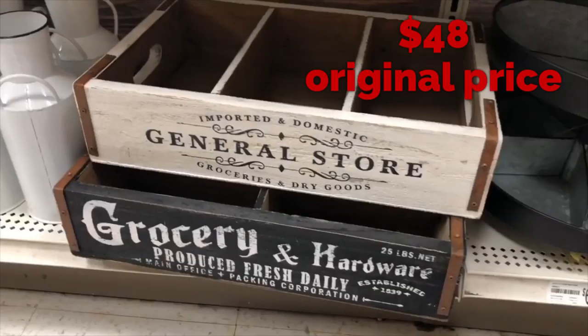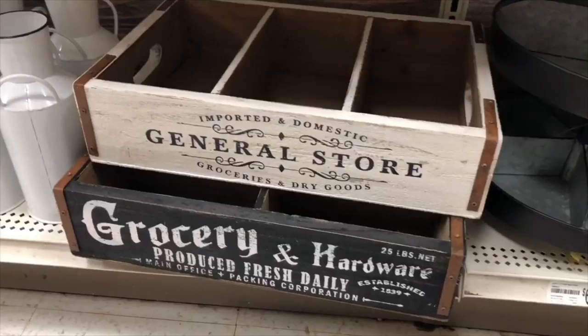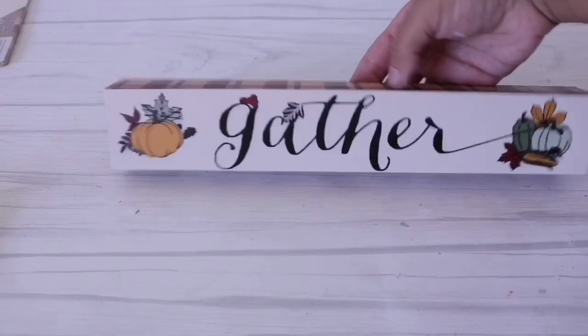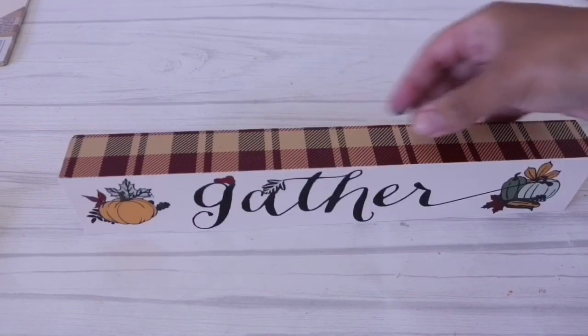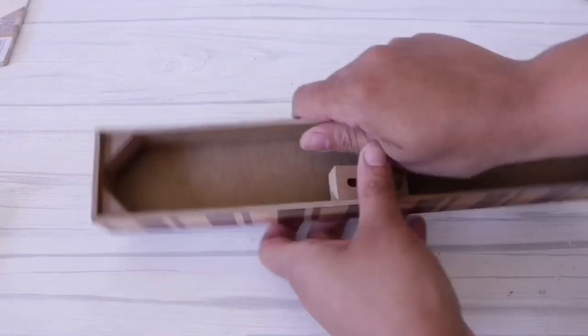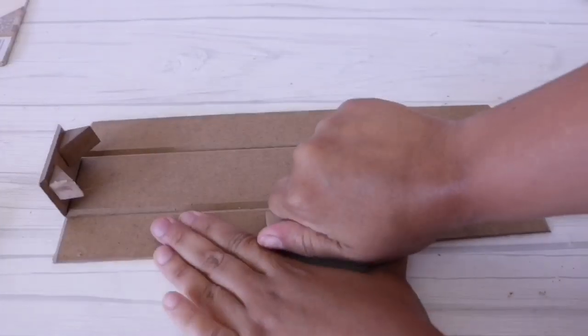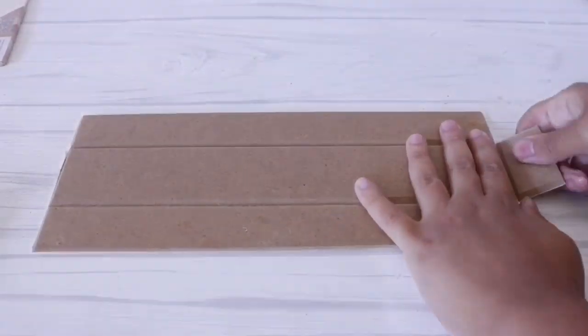For the next one and my favorite, I wanted to recreate these crates, originally 48 bucks. I wanted to make something a little bit more custom. For this I found these gather signs from Dollar Tree, they're actually super easy to take apart, you kind of just pull and it comes off really easily.